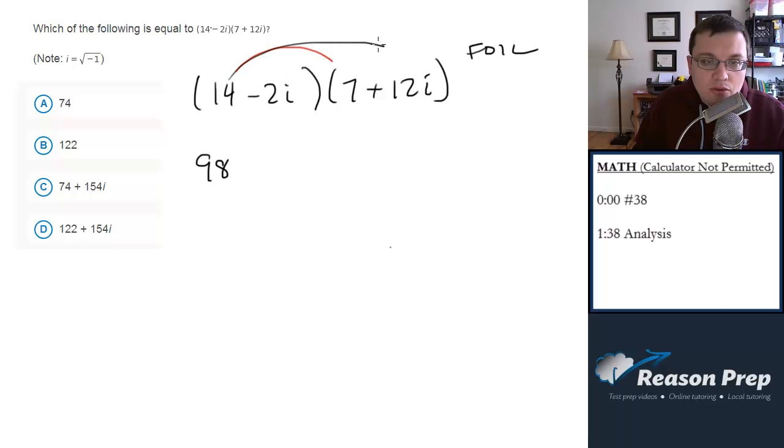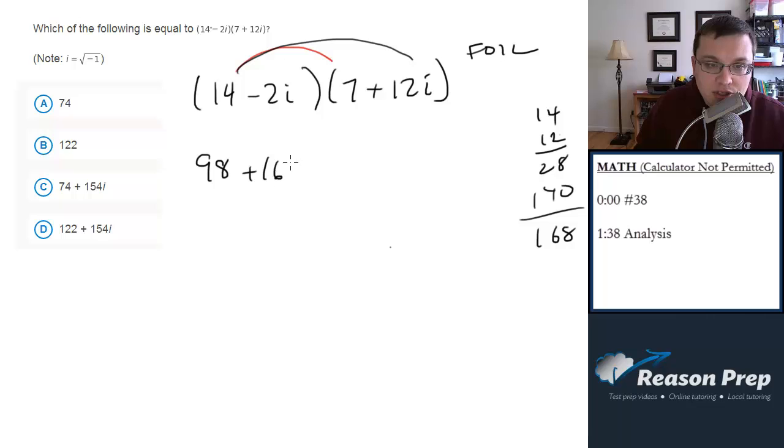Then we're going to do the outsides, 14 times 12i. So what's 14 times 12, a little arithmetic here, 168. So we get plus 168i.